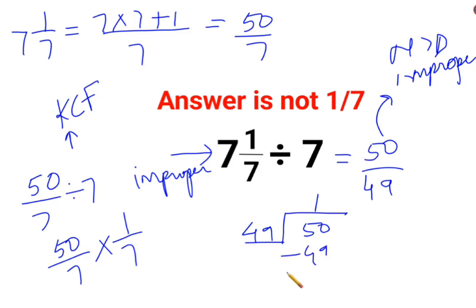49 ones, and you are left with 1. So in this case, your quotient becomes your integer, remainder becomes your numerator and the denominator remains the same. So the answer for this question is either 50/49 or 1 1/49.